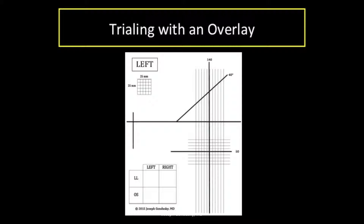I now prefer use of an overlay, which I'll show you. Here's the overlay I currently use. It's a simple grid that references landmarks on the hemi pelvis to measure limb length and offset. The left side is labeled and the clear plastic sheet is reversed for the right side. It can be printed on clear plastic for about 50 cents.